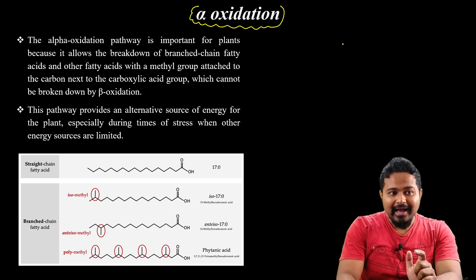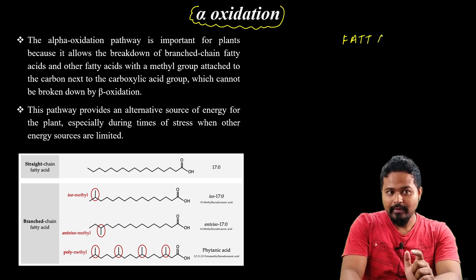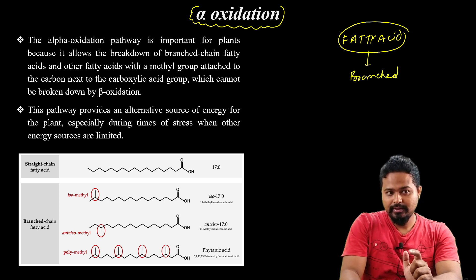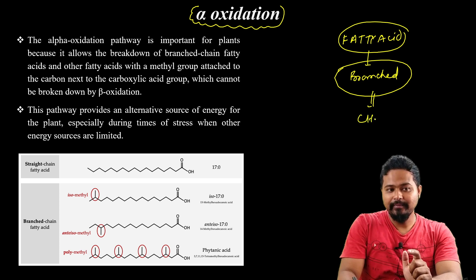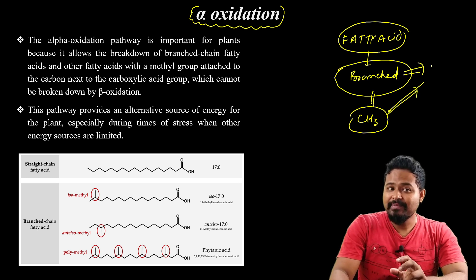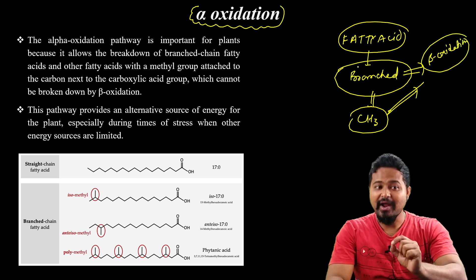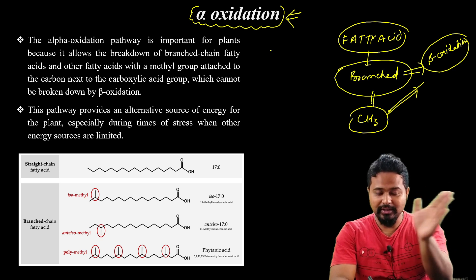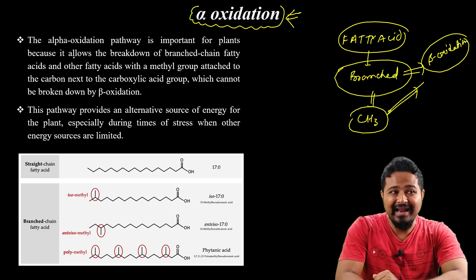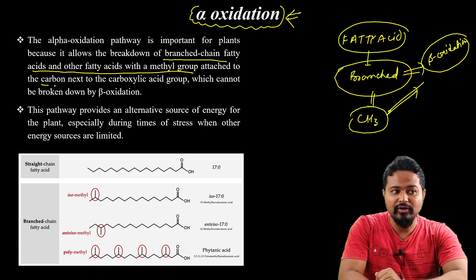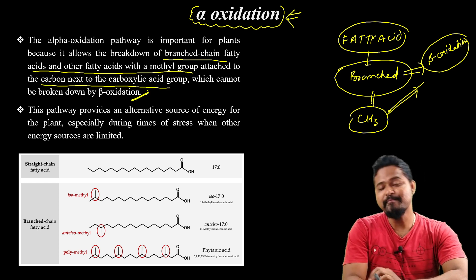Alpha Oxidation means that we have a fatty acid that is branched, with a methyl group. This branched-chain fatty acid cannot be catabolized by beta-oxidation. The alpha oxidation pathway is important for plants because it allows the breakdown of branched-chain fatty acids and other fatty acids with a methyl group attached to the carbon next to the carboxylic acid group, which cannot be broken down by beta-oxidation.